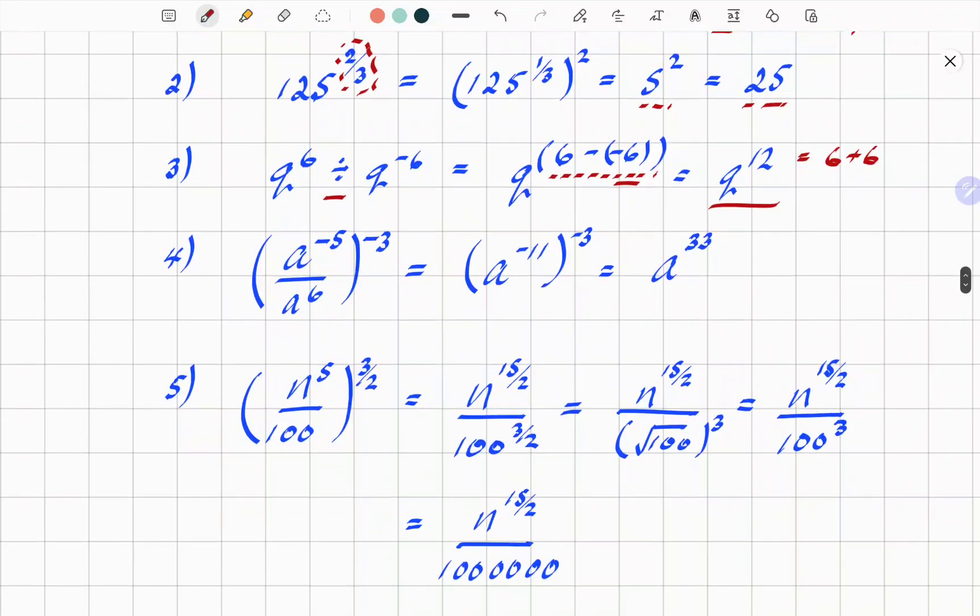Getting a little bit more creative now. Number 4, A to the power minus 5, divided by A to the power 6, all of it to the power minus 3. The first thing we're going to do is take the A to the minus 5, and divide it by A to the power 6, and that becomes A to the power minus 5 minus 6, hence minus 11. Then the whole thing to the power minus 3. Minus 11, if you remember the rule, you multiply these powers, minus 3 equals plus 33, hence my answer, A to the power 33.